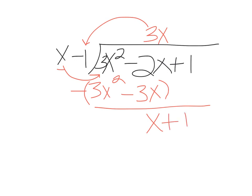Now the question is, how many times does x go into x? Well, it goes in one time. 1 times x is x, and 1 times negative 1 is negative 1. And we're subtracting all of that. So 1 minus a negative 1 would be 2. That's how you get the remainder of 2.